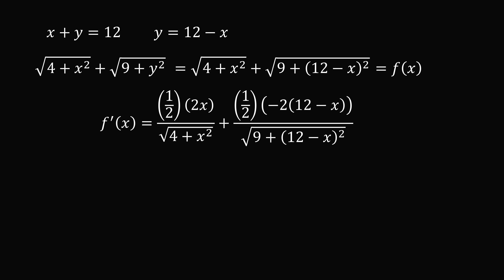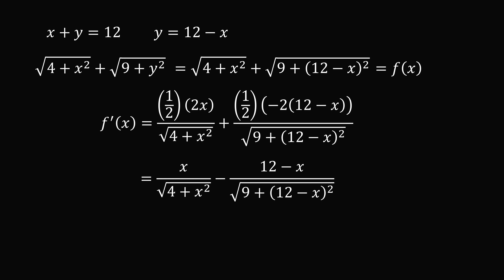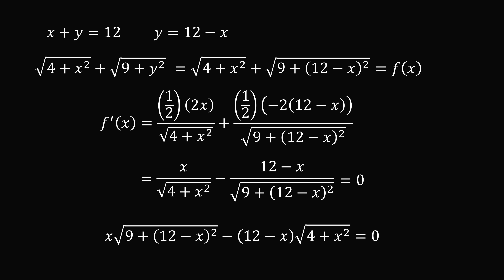We use the chain rule, and we have the sum of two different things, so it's going to be a little bit complicated. We can then simplify this to get x divided by the square root of 4 plus x squared, minus 12 minus x divided by the square root of 9 plus the square of 12 minus x. We want this derivative to be equal to zero. We now multiply both sides by the product of the denominators, which simplifies to x multiplied by the square root of 9 plus the square of 12 minus x, minus 12 minus x multiplied by the square root of 4 plus x squared, all equal to zero.